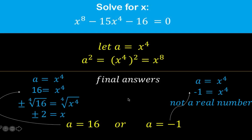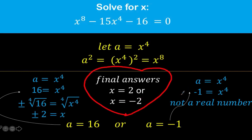And so for our final answers, we only consider x equals positive 2, or x equals negative 2. x to the 4th equals negative 1 is an extraneous root. So this is now our final answer. Thank you very much.